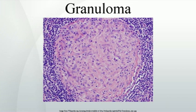Granuloma is an inflammation found in many diseases. It is a collection of immune cells known as macrophages. Granulomas form when the immune system attempts to wall off substances that it perceives as foreign but is unable to eliminate. Such substances include infectious organisms such as bacteria and fungi, as well as other materials such as keratin and suture fragments. The adjective granulomatous means characterized by granulomas.